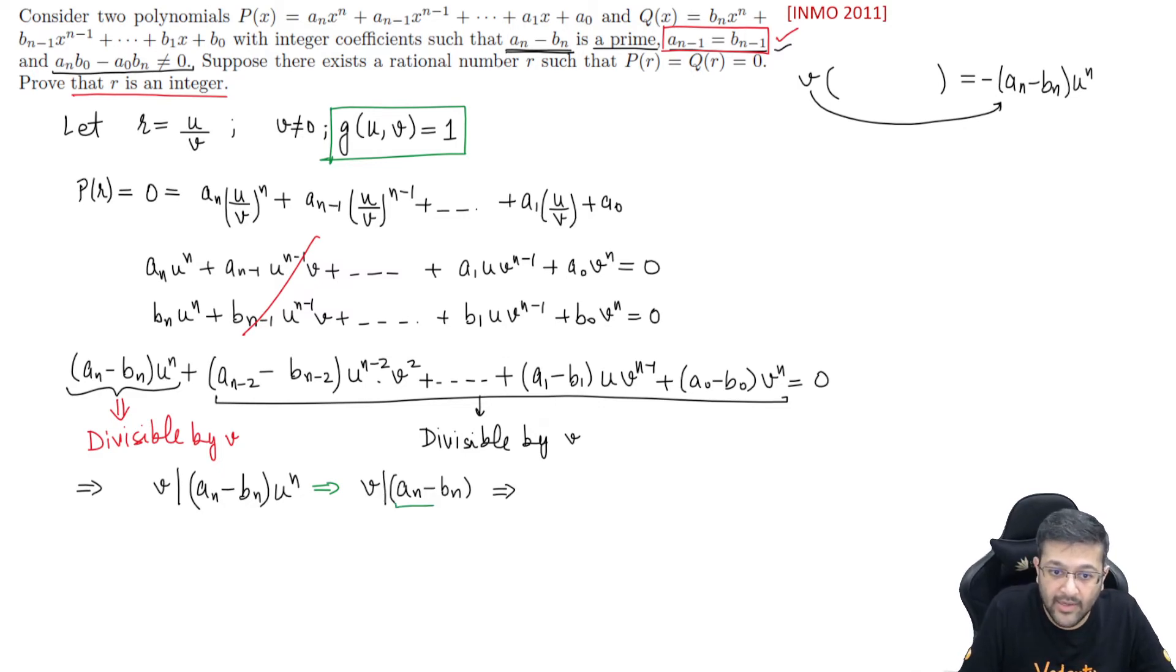If v divides a_n - b_n which is a prime, there are two possibilities: either v is 1, or v equals a_n - b_n. If v equals 1, then r is u by v where v is 1, so it becomes an integer. That case is solved. We only have to consider the case where v equals a_n - b_n.